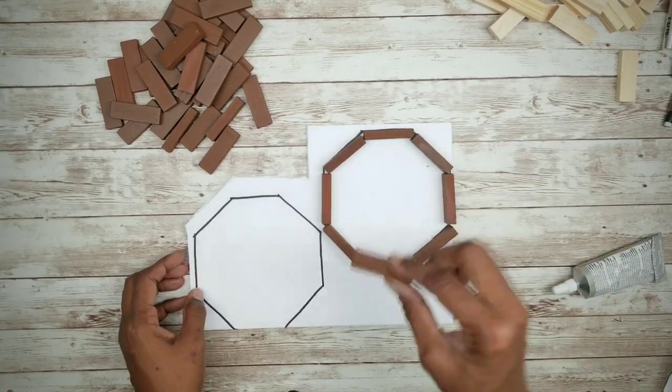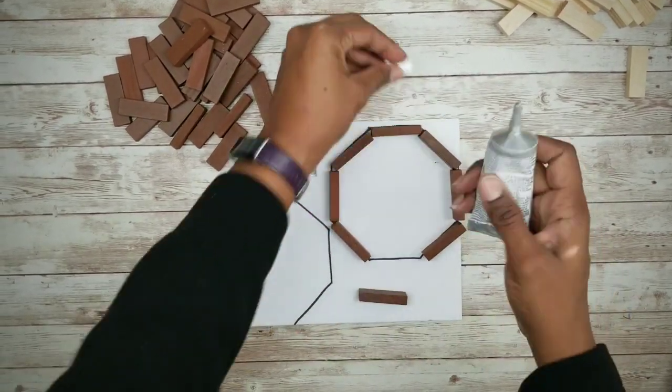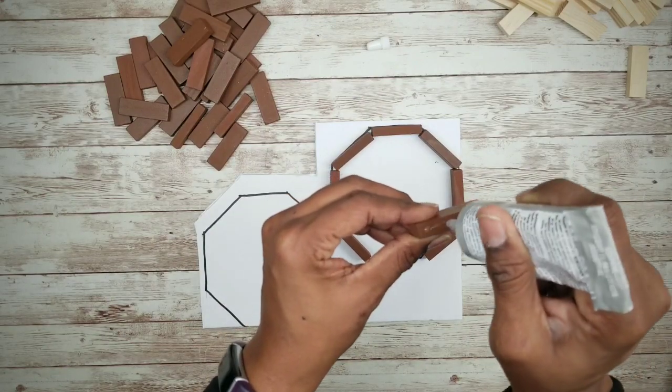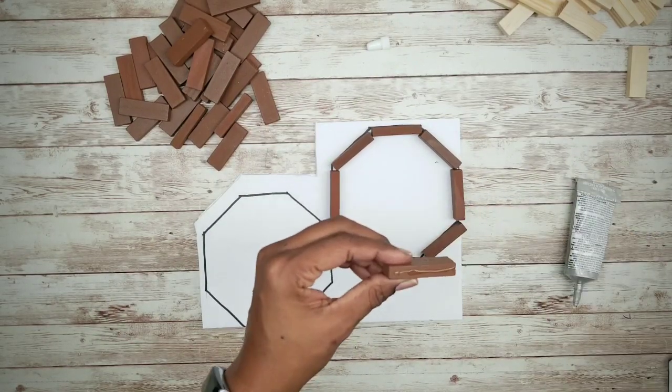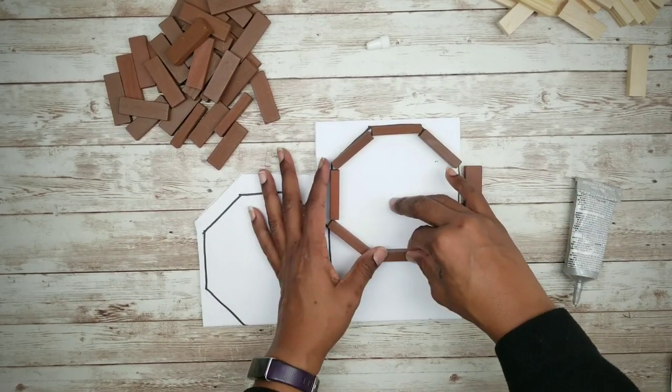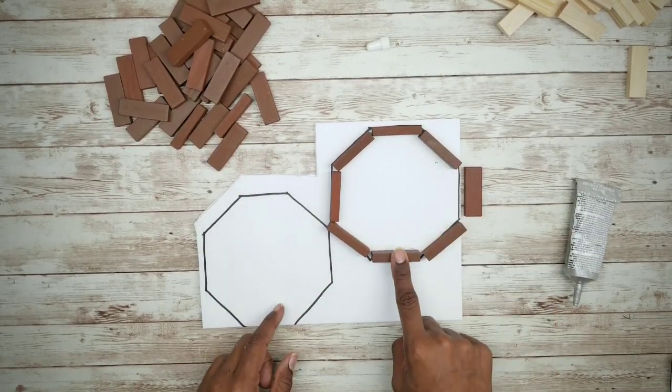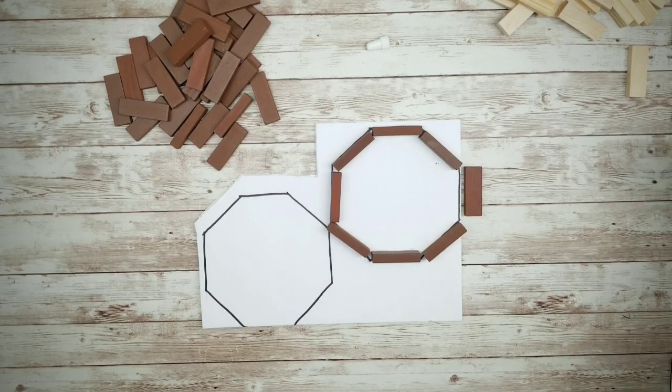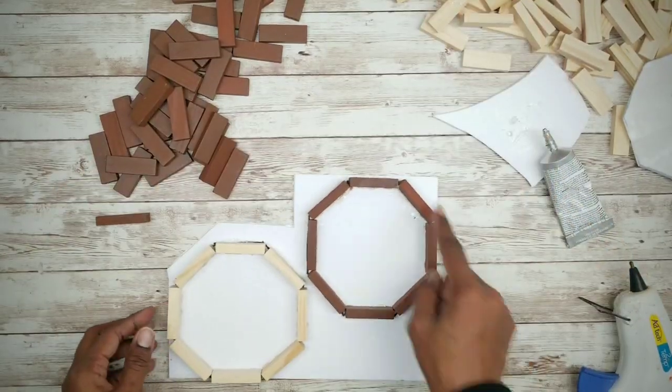Once everything looks good, go ahead and take your first block and add some E6000 and some hot glue and secure it into place. Repeat this all the way around your octagon shape for both shapes.